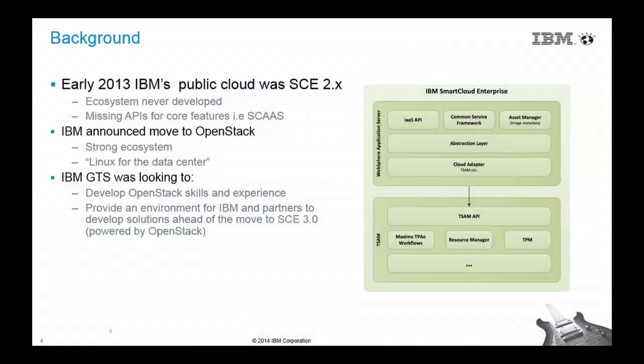In early 2013, IBM announced that we were going to support OpenStack and move to OpenStack — because of the strong ecosystem. It's essentially Linux for the data center. At the same time, GTS, the organization we work for, was looking to develop skills and experience and also provide an environment for IBM and partners to develop solutions, experiment, and refine them through the Cloud First Factory environments.